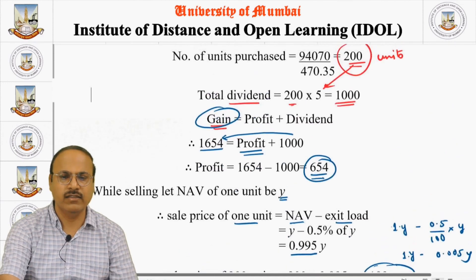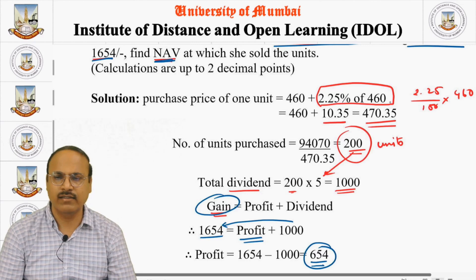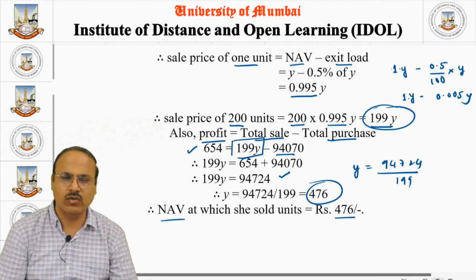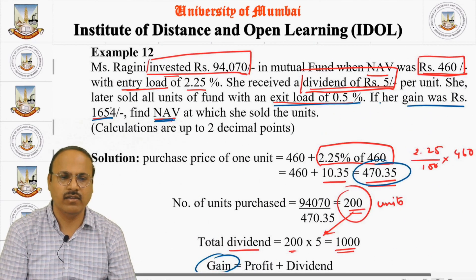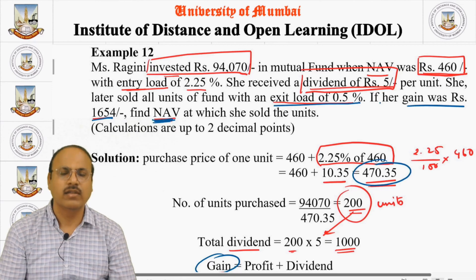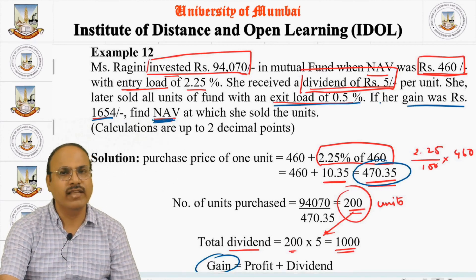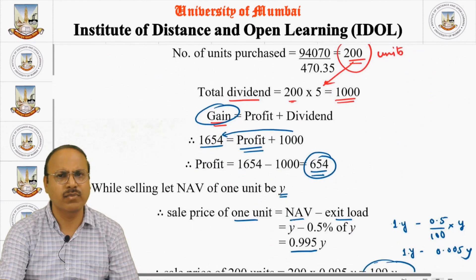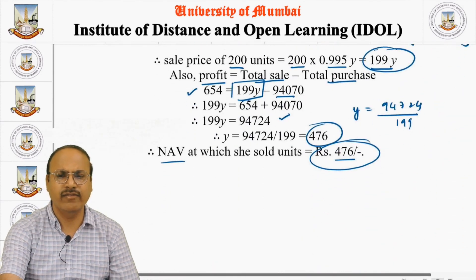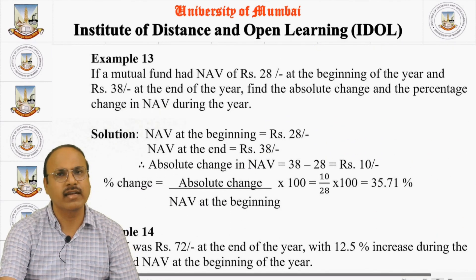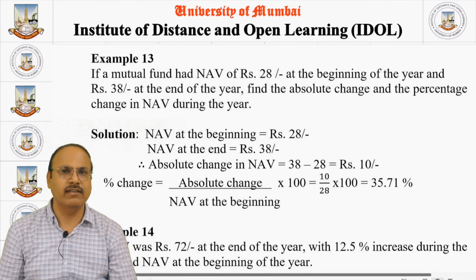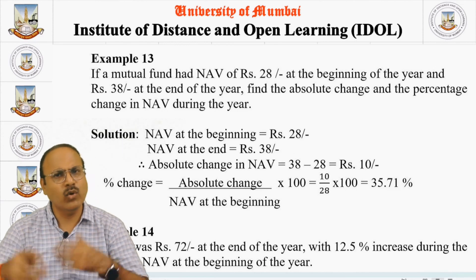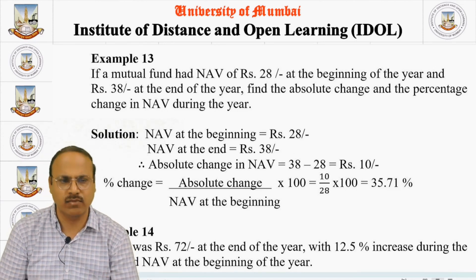The question asked us to find the NAV at the time of sale, and the answer is Rs. 476. It is simple — go step by step and you will get the solution. The more you practice, the more comfortable you will be in solving these problems.